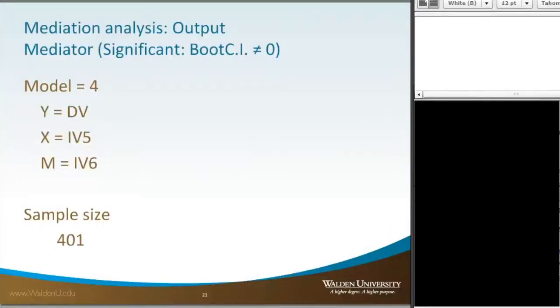Alright, so once you hit OK, we get the output here. When we're looking at mediators, we actually see it's model 4, then it's the DV, variable 5, variable 6, and sample size is 401.